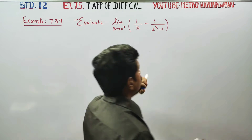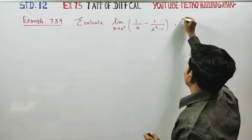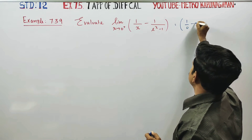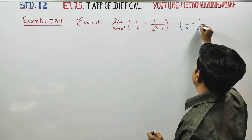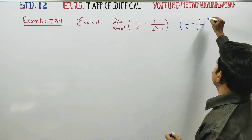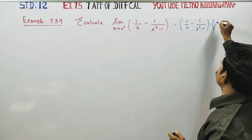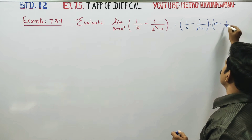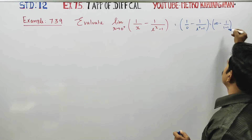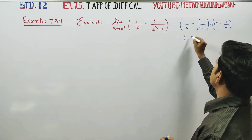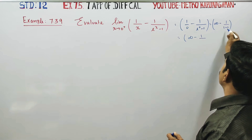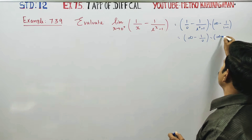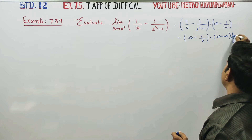When we put x equals 0 directly: 1 by 0 is infinity, and e power 0 is 1, so 1 minus 1 is 0, giving 1 by 0 which is also infinity. So this is infinity minus infinity form, which is an indeterminate form.